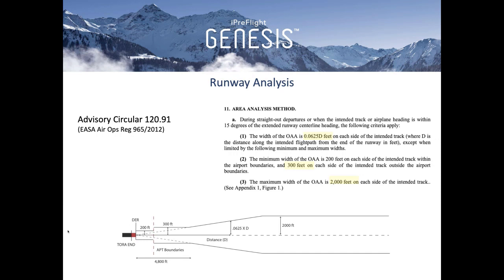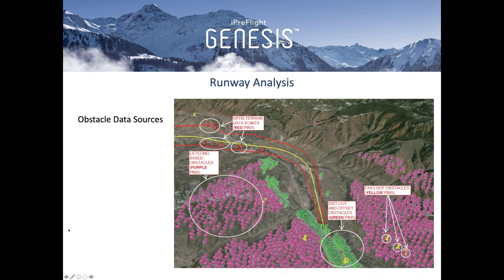What obstacle sources are we looking at? The FAA's NFDC data — published as distance-out and offset as well as lat/long based — the FAA's DOF obstacle set, which is our version of en-route obstacles, obstacles from the AIP Type A AOC charts including 2.10 obstacles and route 5.4 obstacles. We also have the Shuttle Radar Topography Mission (SRTM) terrain data points in our database to supplement terrain data, providing a data point every 30 meters worldwide.